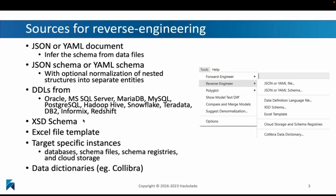It could be a JSON document or a YAML document. It could be a JSON schema or a YAML schema. It could be DDL files that you get from a wide variety of database systems that know and work with DDLs, like, for example, Oracle or SQL Server or DB2, whatever it might be.